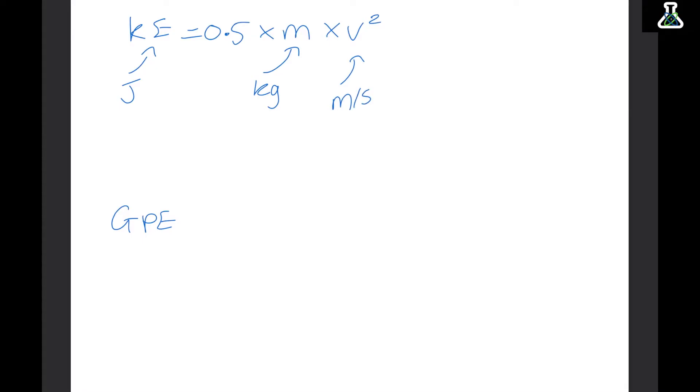Now to find the change in GPE, which is just what we started with compared to what we end with, we do the mass times the gravity times the change in height. GPE is measured in joules. Mass is measured in kilograms. Gravity is measured in newtons per kilogram, and gravity on earth is 10 newtons per kilogram. And height is measured in meters.